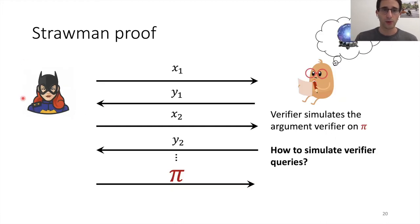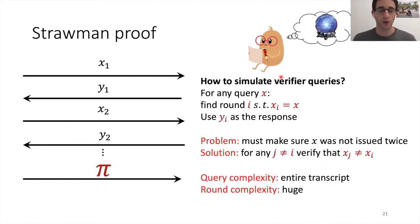And so the verifier is going to have this oracle in his head and simulate it for the prover. So what does that mean? The prover, whenever he wants to make a query, queries x1 and the verifier is going to respond with y1. The prover is going to take this as the answer of the random oracle and query x2 and so on. Finally, the prover gets the final argument π and sends it to the verifier. Now, what does the verifier do? Well, he got this argument π. So he wants to run the argument verifier on this. The only question is how to simulate queries for the argument verifier. And the important thing is that we want to simulate queries consistently with the queries that we gave to the prover.